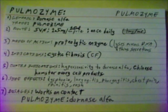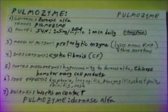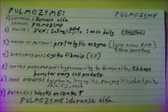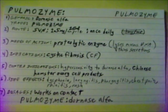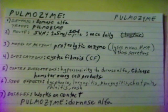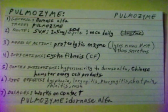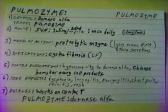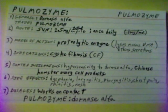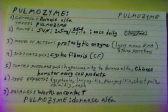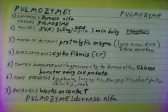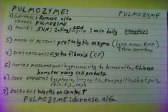Pulmozyme. Generic name: Dornase Alpha. Trade name: Pulmozyme. Given by small volume nebulizer, 2.5 mg per 2.5 mL ampoule once daily. Mode of action: a proteolytic enzyme which lyses DNA and thins secretions. Indication: cystic fibrosis.